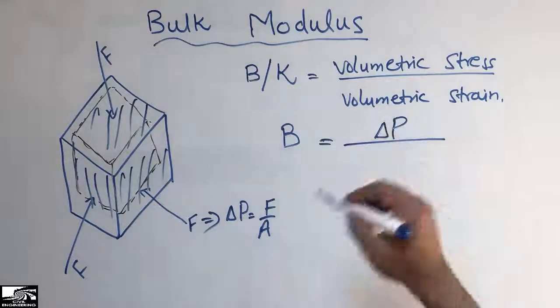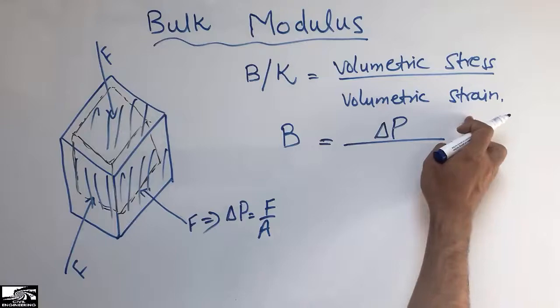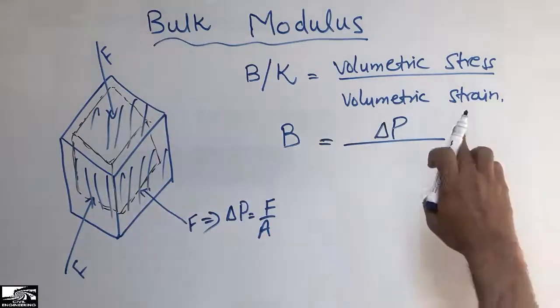Now the volumetric strain. The volumetric strain is the ratio of the change in volume to the original volume of this object.